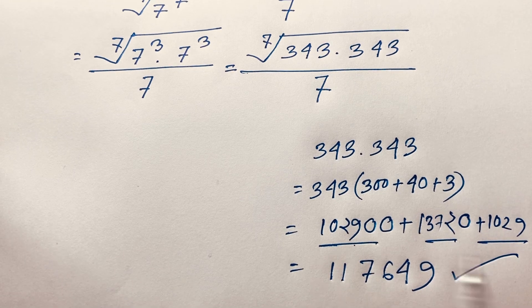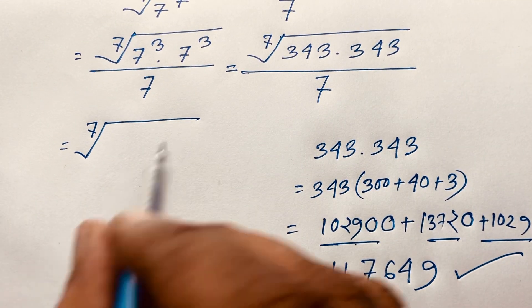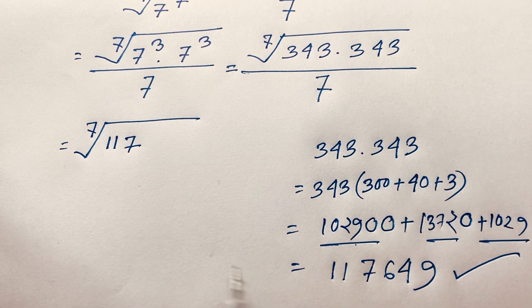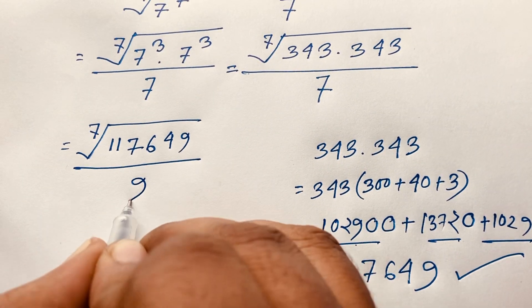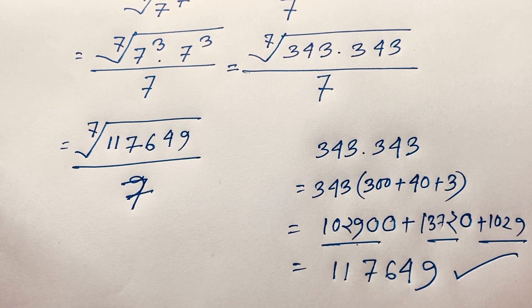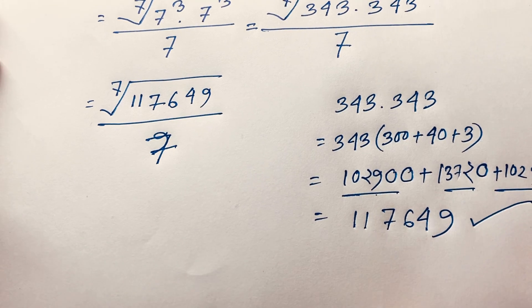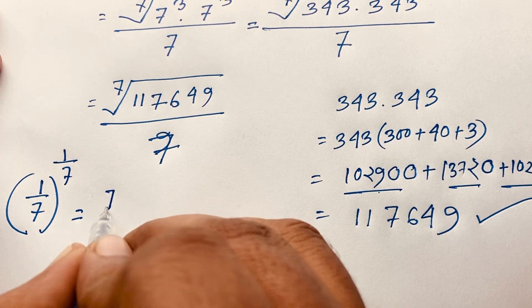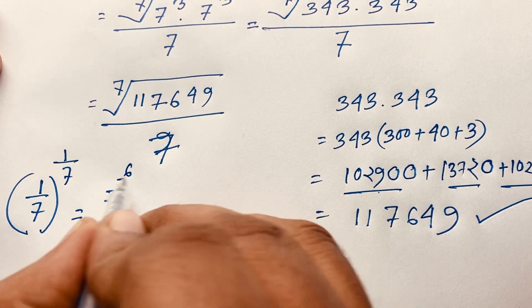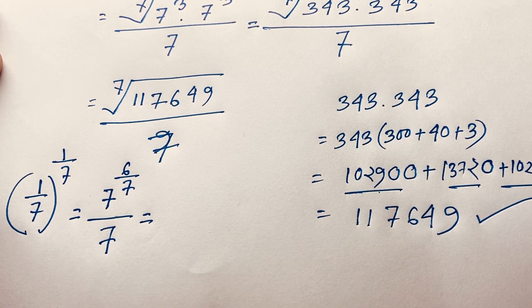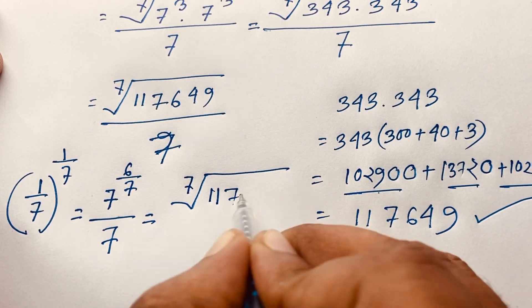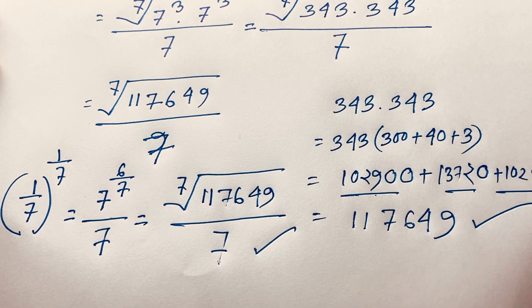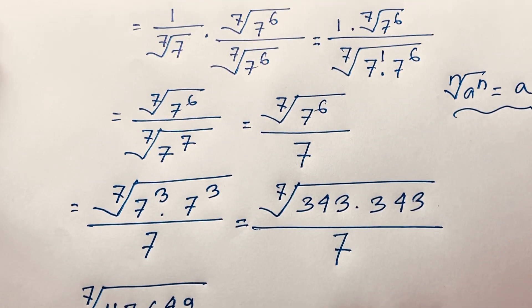Now, at this moment, this expression becomes the 7th root of 117649 over 7. So this is our final answer. Or you can say: (1 over 7) to the power 1 over 7 equals 7 to the power 6 over 7, which is the 7th root of 117649 over 7. This is our final answer in radical form. Thank you all — if you enjoyed this video, please subscribe to my channel for other interesting videos. Goodbye, take care.